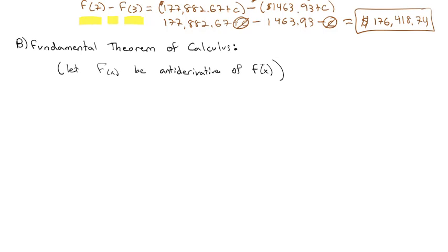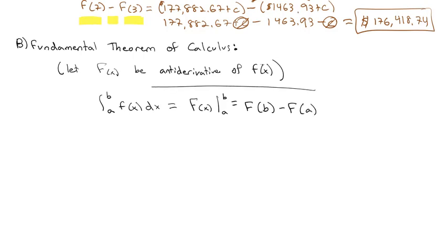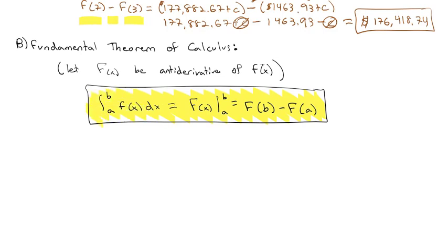Looking at the Fundamental Theorem of Calculus — a reminder of notation: we let capital F of x be the antiderivative of lowercase f of x. The theorem says we can integrate from a to b of lowercase f of x dx, find the antiderivative capital F of x, and evaluate it from a to b, meaning we take the upper limit b and subtract the lower limit a.